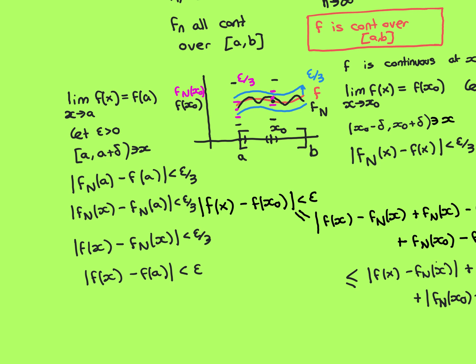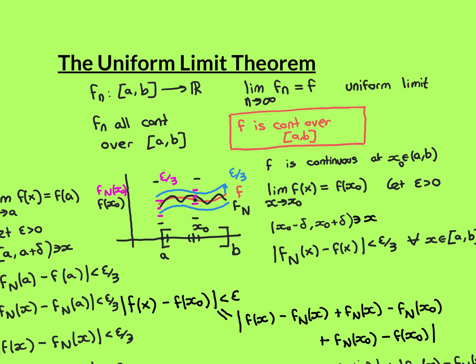So for a general epsilon I have shown how to find a half-delta interval such that everything inside is mapped into the epsilon interval around f of a by f, satisfying the epsilon-delta criterion: the limit as x approaches a of f of x equals f of a. Therefore f is continuous at the boundary point a. The argument is exactly the same for boundary point b, just using half-intervals going the other direction. Overall, we have proven the uniform limit theorem: if you have a sequence of continuous functions over [a, b] converging uniformly to f, then f is continuous everywhere over [a, b].